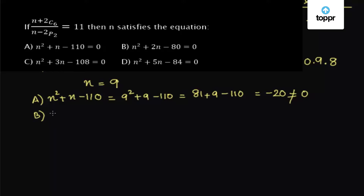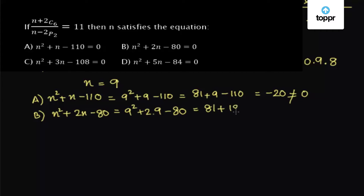For the second equation, n²+2n-80=0: substituting n=9 gives 9²+2(9)-80 = 81+18-80 = 19, which is not equal to 0. So n=9 does not satisfy this equation either.